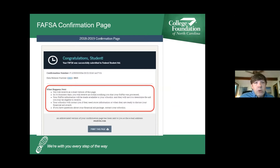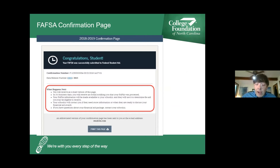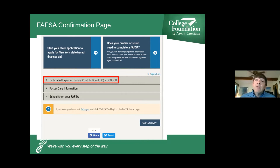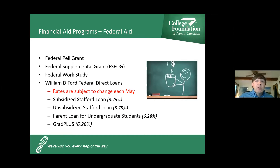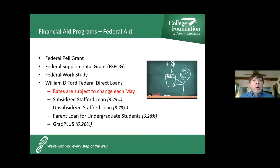Once the FAFSA is completed, the student will receive a confirmation page. Make note of your data release number and your expected family contribution. The lower the expected family contribution, the more grant eligibility you can take advantage of. If a family has a zero EFC, they're automatically eligible for a Pell Grant upwards of $6,000. Students who complete the FAFSA and show need may also be eligible for the Federal Supplemental Education Opportunity Grant and Federal Work Study, which allows students to work on a college campus through a federal program.